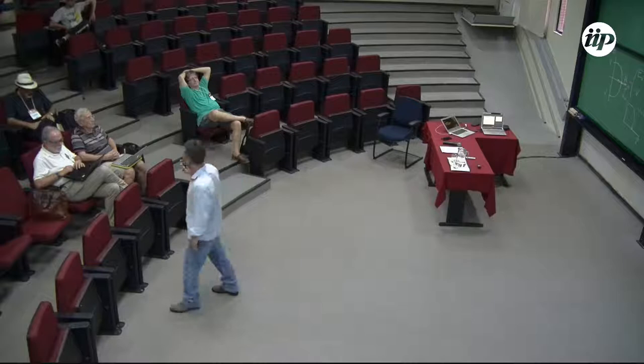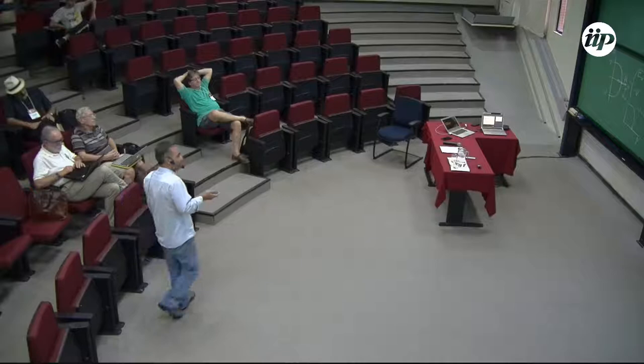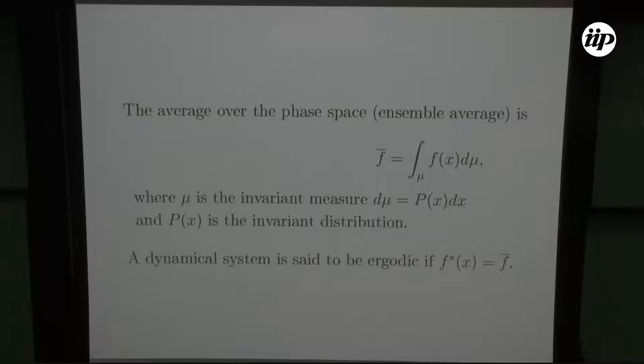The second concept is the average over phase space, also called the ensemble average. It is defined as the integral of f(x) with respect to the invariant measure μ, where μ = p(x)dx and p is an invariant distribution. A dynamical system is ergodic if f*(x) equals the ensemble average.